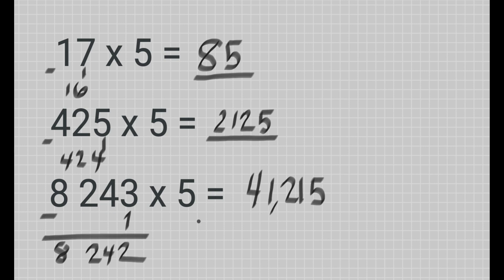Since our multiplicand is an odd number, the last digit will be 5. So therefore 8,243 times 5 is equal to 41,215. I hope you learned something today and I hope you will master this concept. Thank you for listening and have a nice day.